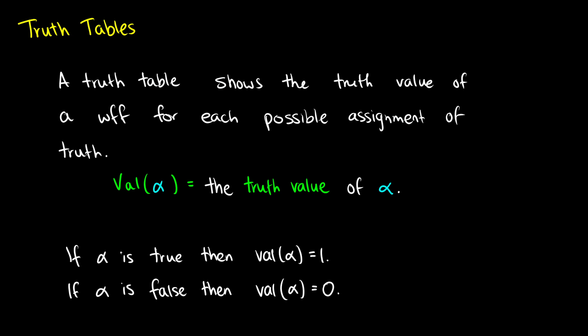A truth table is used to show the truth value of a well-formed formula for each possible assignment of truth. Basically, we take all of the possible worlds out there. So if we have two propositions A and B, we have a world where both are true, a world where A is true and B is false, a world where A is false and B is true, and a world where both are false. We see what happens when we take those two propositions and use operators on them, like the negation or the conjunction and so on.